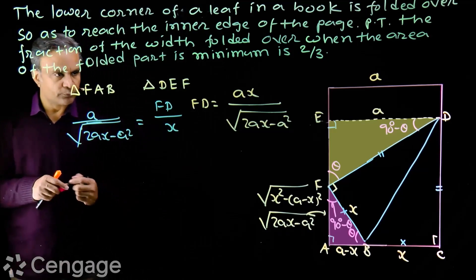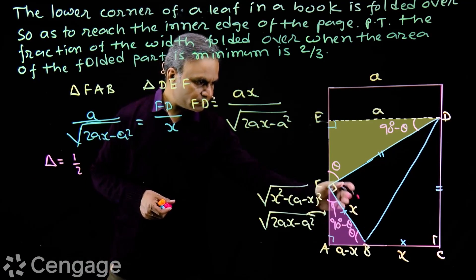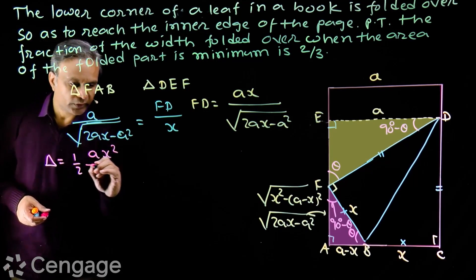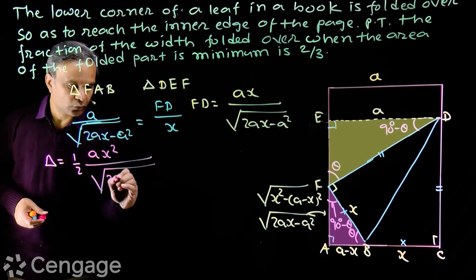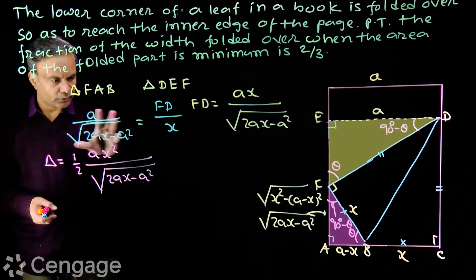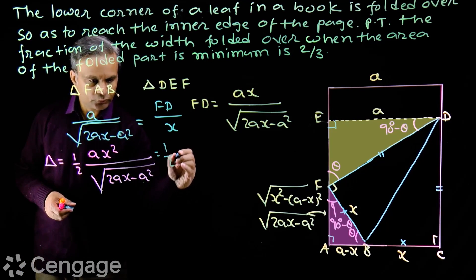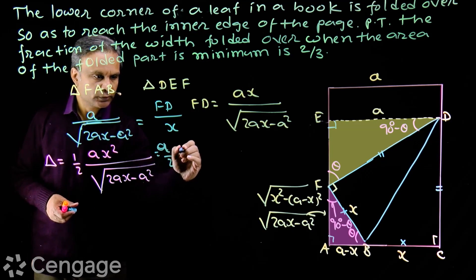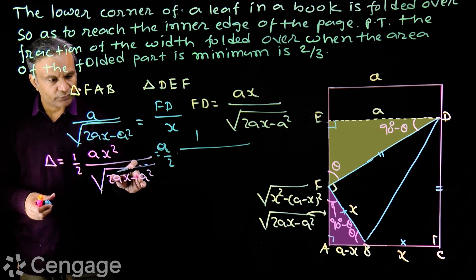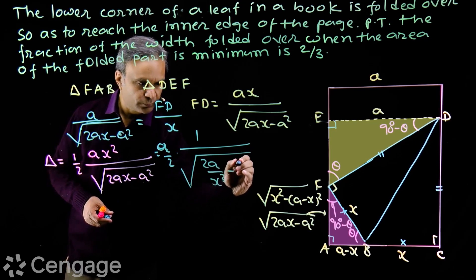Now we can get the area of triangle BFD — the folded part. Area delta equals one-half multiplied by BF multiplied by FD, giving us (1/2) times ax squared over the square root of 2ax minus a squared. This is a function of variable x. Before finding the minimum, we simplify: this equals (a/2) multiplied by 1 over the square root of (2a over x cubed minus a squared over x to the power 4).